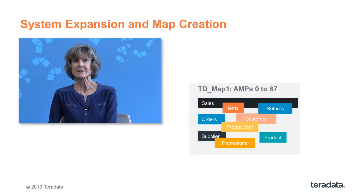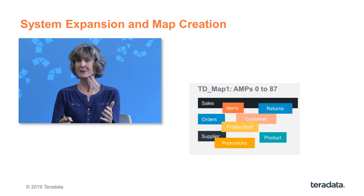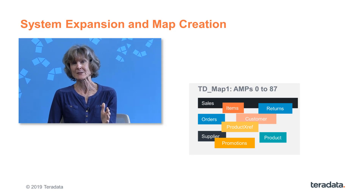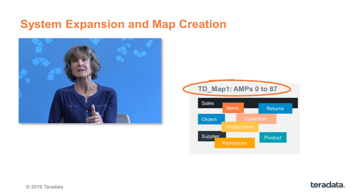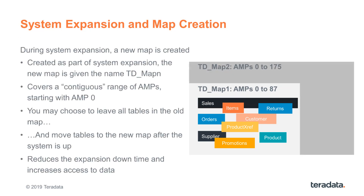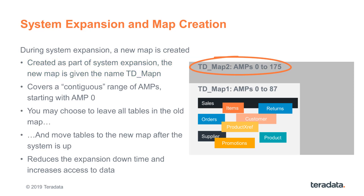When you have a Teradata system, before you've expanded it, let's say your Teradata system today — you've got one hash map that essentially owns all your user tables, and we're calling it in this example TD underscore map one. When you expand your system, you're going to get a second hash map that also will be covering your primary table data, but it includes more AMPs — all the AMPs in the recently configured system. So now you've got two of these maps that exist at the same time for your primary data.